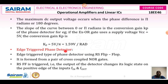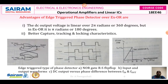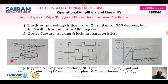Next we will look at the edge-triggered phase detector. The edge-triggered type phase detector is basically an RS flip-flop, constructed using cross-coupled NOR gates. It is formed from a pair of cross-coupled NOR gates. When triggered, the output of the detector changes its logic state on the positive edges of F-in and F-out. In this configuration, F-in is given to the S input and F-out is given to the R input. The RS flip-flop truth table: when both inputs are zero, it holds the previous state; when S=1, output Q=1; when S=0, output Q=0; when both inputs are one, it is the forbidden state.